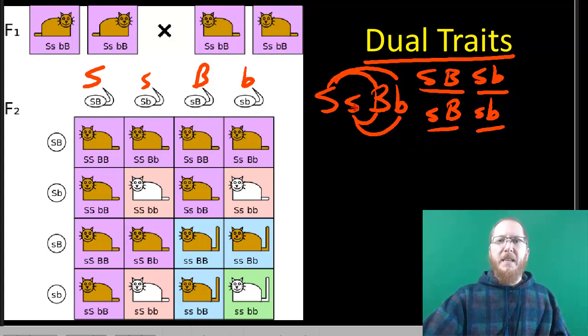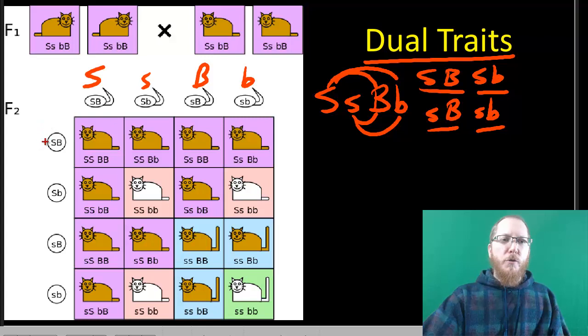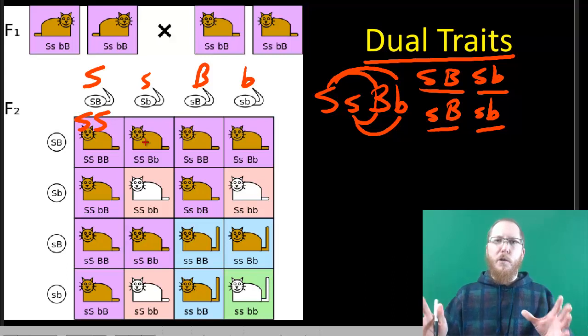When we're doing this, that FOIL method, that idea of the first guy with the third and fourth and the second guy with the third and fourth, that's the best way to make sure you get this right. Under no circumstances should your offspring not look like the parents. What I mean by that is if you did screw this up and you just wrote like big S, little s, big B, little b, one by one, you'd notice your offspring would have stuff like big S, big S, with no Bs at all. That should be a red flag that you've done something horribly wrong.